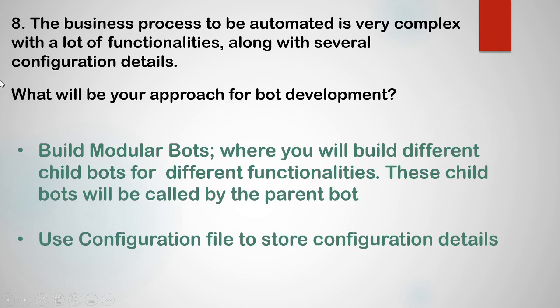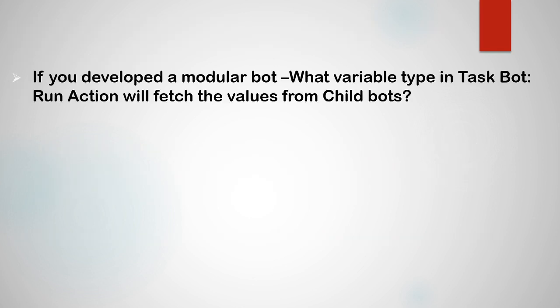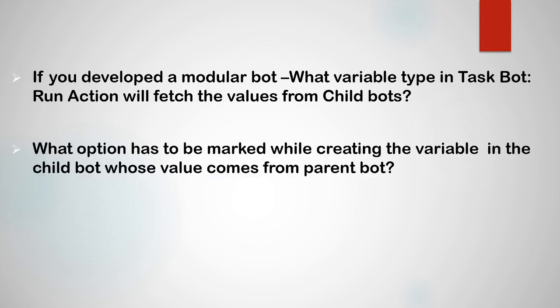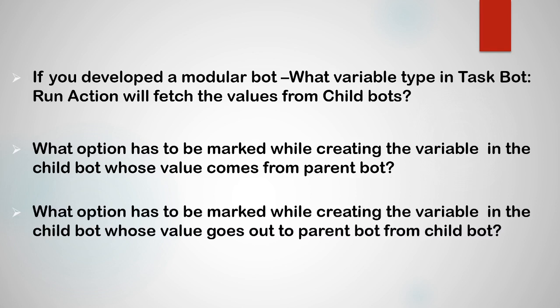There could be multiple follow-up questions on modular bots. One question could be: what variable type in the task bot run action will fetch values from the child bots? The variable used in the run action is a dictionary variable. Also, what option has to be marked while creating a variable in the child bot whose values will come from the parent bot? If values are coming from the parent bot, the variable should be marked as an input variable in the child bot. If values are going out from the child bot to the parent bot, those variables are marked as output variables.